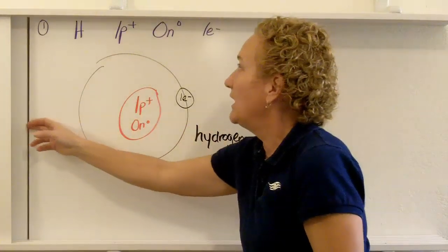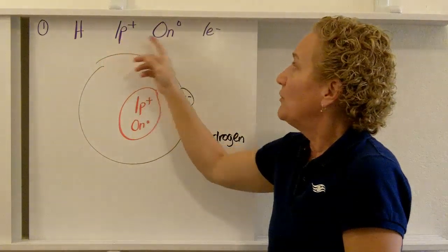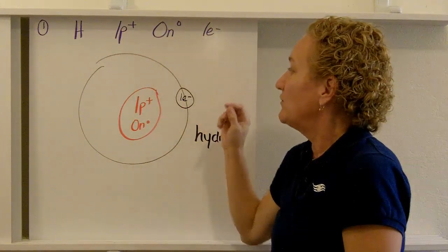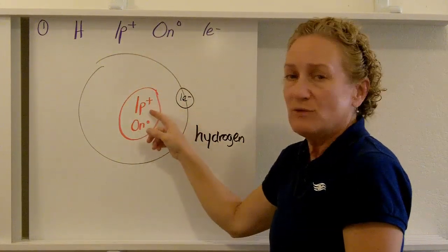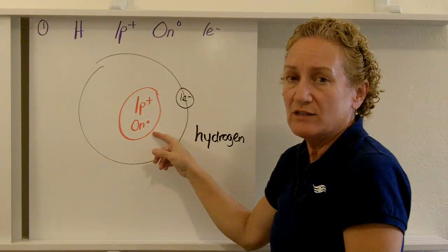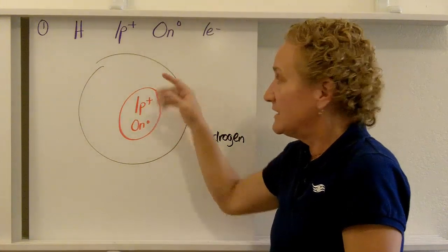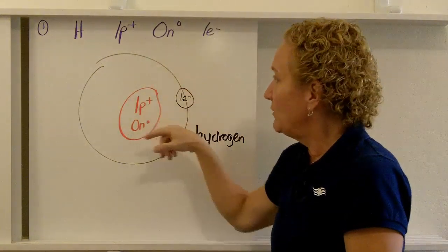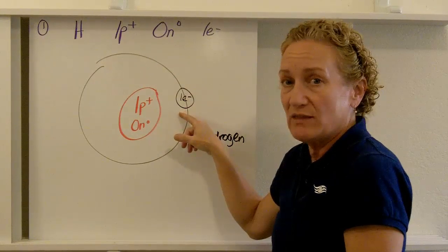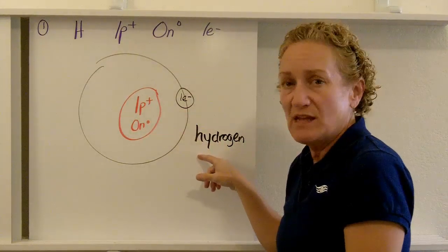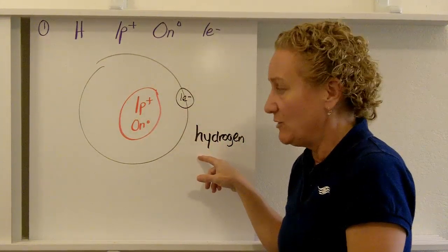Let's do another example. Let's do hydrogen. One proton, no neutrons, one electron. There's my nucleus, one proton and zero neutrons. Since it's in row one, I put one circle around it. One electron, it goes right there. And then I always like to write the name of the element just so that my teacher knows that I know what I'm talking about.